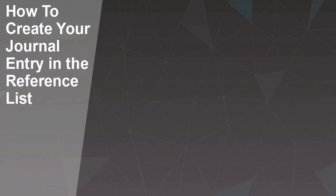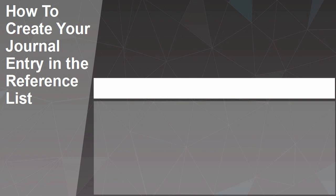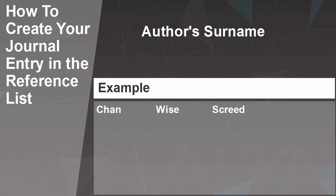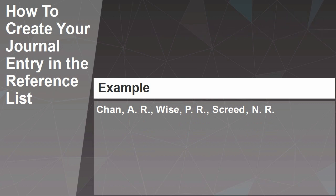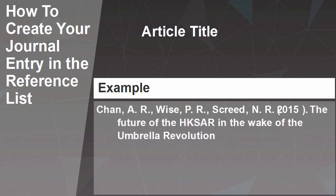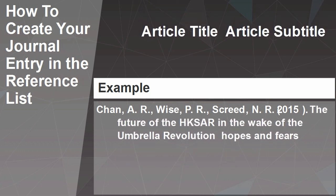How to create your journal entry in the reference list. Put the family name first, followed by a comma, and the initials, followed by full stops. Then insert the year in brackets, followed by a full stop. Then insert the article title and subtitle, if any, followed by a full stop. Insert a colon between the title and any subtitle.